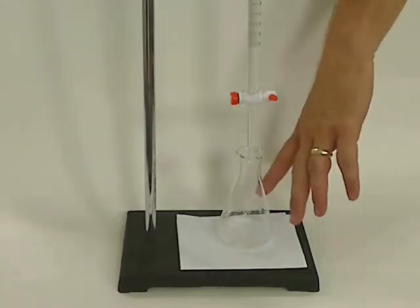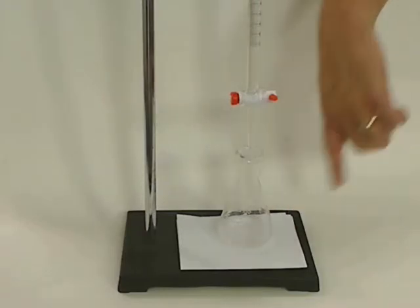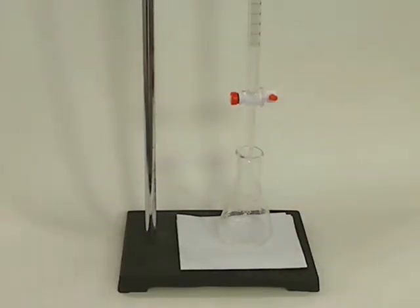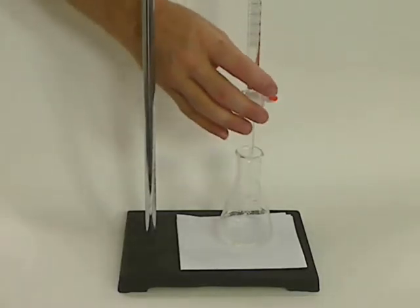I always put my Erlenmeyer flask on a white surface so it's very easy to see the color of the indicator. And then I practice using the burette.